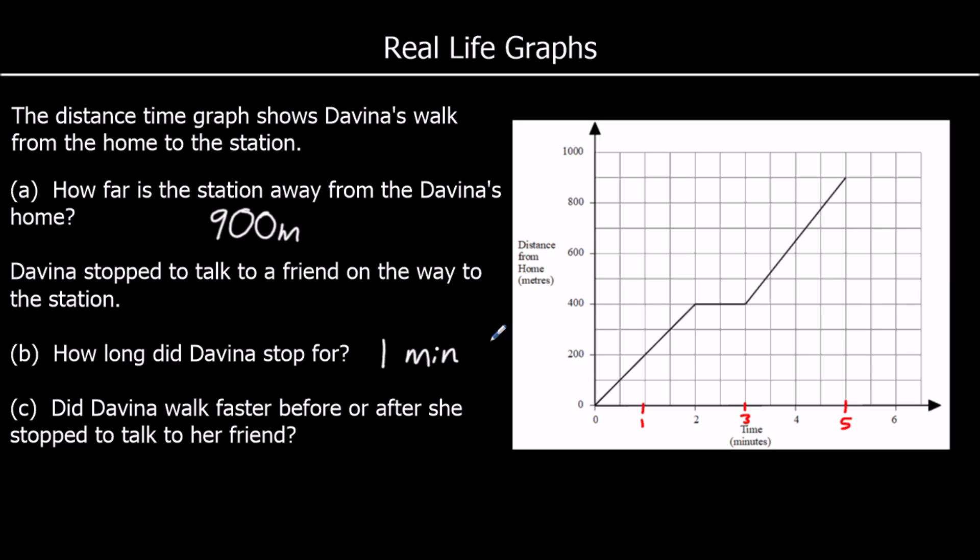Did Davina walk faster before or after she stopped to talk to her friend? So it's the speed more before she stopped or after she stopped. And we can say the speed is how steep the line is, the gradient of the line. And before she stopped, every 30 seconds it went up by one. Every 30 seconds, she went 100 meters. After she stopped, every 30 seconds was more than 100 meters. Every 30 seconds went over 100 meters. So she went faster after she stopped.